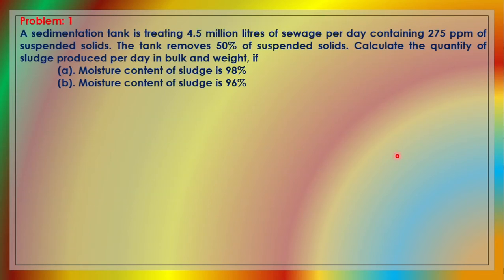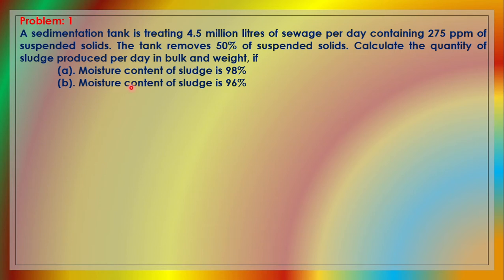A sedimentation tank is treating 4.5 million liters of sewage per day containing 275 ppm of suspended solids. The tank removes 50% of suspended solids. Calculate the quantity of sludge produced per day in bulk and weight, if: (A) moisture content of the sludge is 98%, and (B) moisture content of the sludge is 96%.